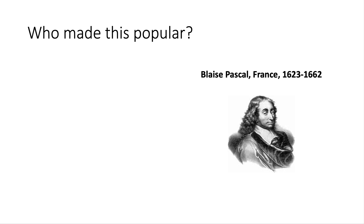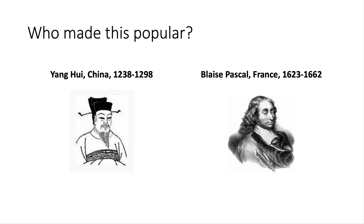Really, about 400 years before him, there was a mathematician named Yang Hui who lived in China. In the 13th century, he made this popular — maybe he should be credited with inventing it. In China, they may call this Yang Hui's Triangle. It's been about 400 years since Pascal made it popular, so maybe some math influencer today can make it more popular and get it renamed.